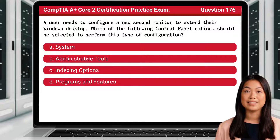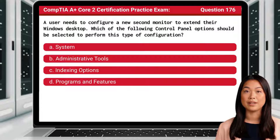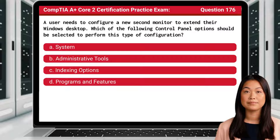Question 176. A user needs to configure a new second monitor to extend their Windows desktop. Which of the following control panel options should be selected to perform this type of configuration? The answer is A.